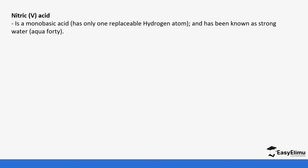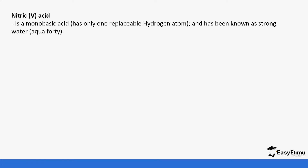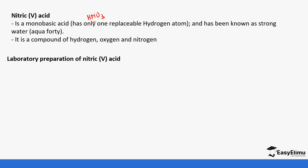Nitric acid is a monobasic acid. When you talk about monobasic, it means it has one replaceable hydrogen atom, but it is referred to as one of the strong acids. You can see from the formula it has only one replaceable hydrogen atom. It is a compound of hydrogen, oxygen, and nitrogen as you can see from the formula.